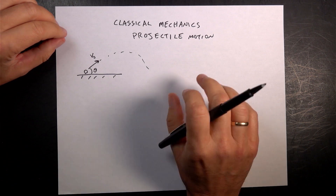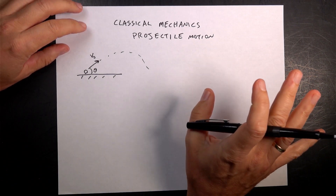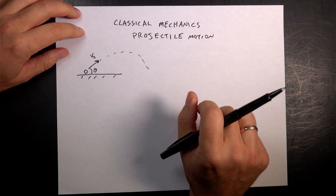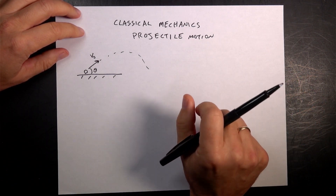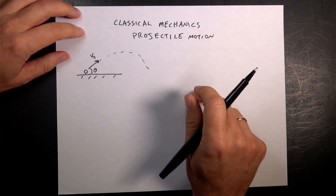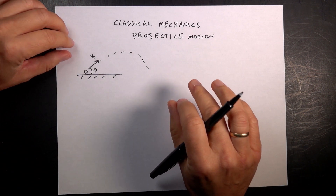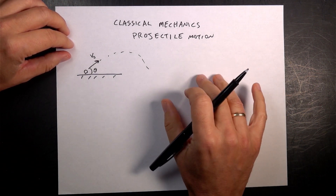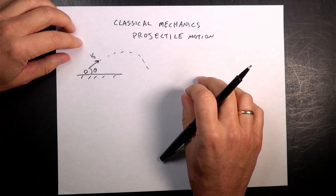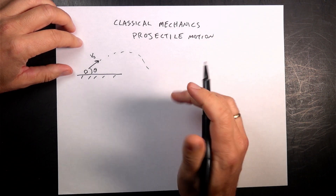This is for classical mechanics, and you almost certainly did projectile motion in your introductory physics course, but we're going to do it a little differently. I think it will help us get in the flavor of how we do things in classical mechanics, because we're going to use some different notations.